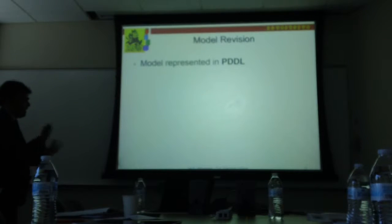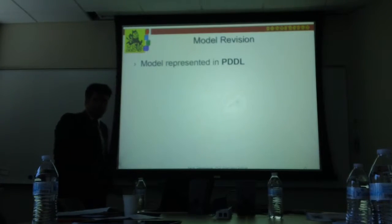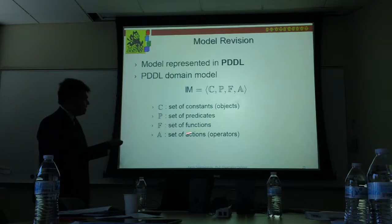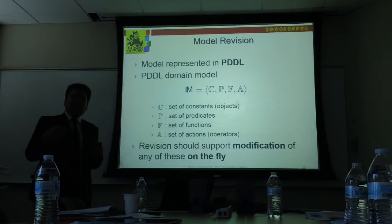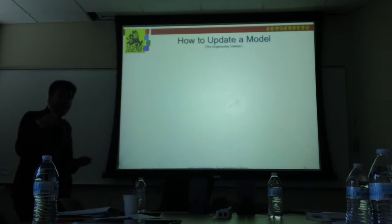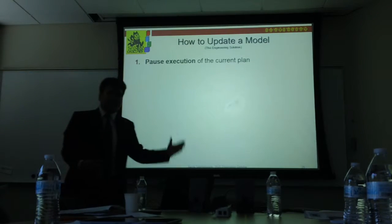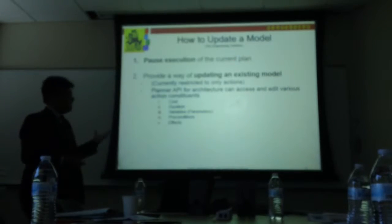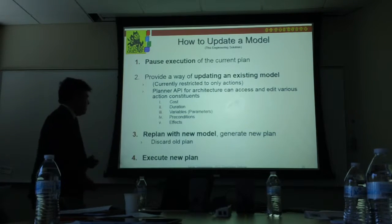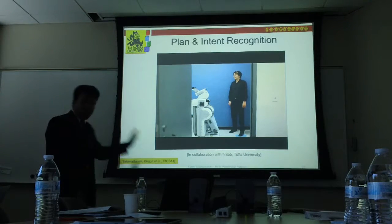The model is represented in PDDL — described in terms of constants, predicates, functions, and actions. You need to specify a way to provide modifications on the fly. The way we update the model is: pause execution of the current plan, provide a way of updating the existing model via an API, then replan with that new model and execute the new plan. That's how the model update process works.